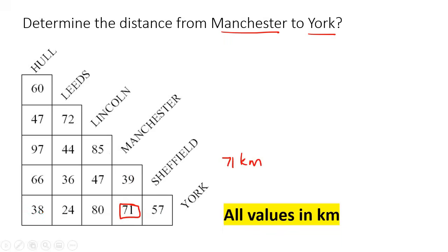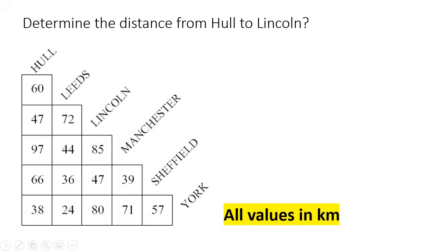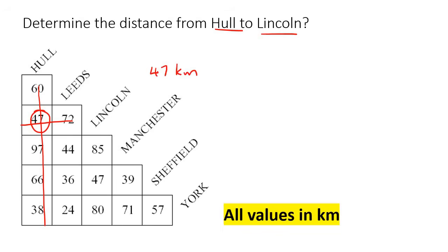Now let's do a few more examples. We're going to go from Hell to Lincoln. With Hell, you go down, and with Lincoln you go across, and where they intersect that is the answer: 47 kilometers.